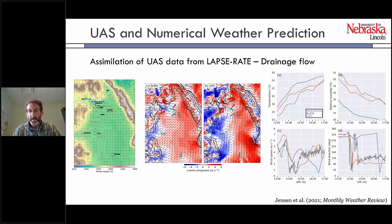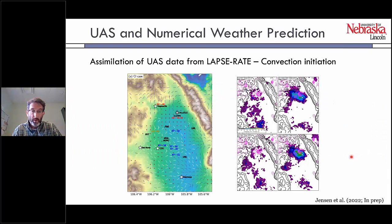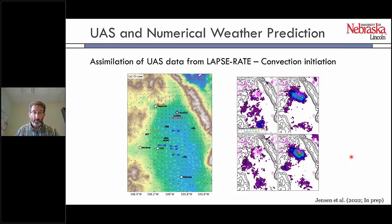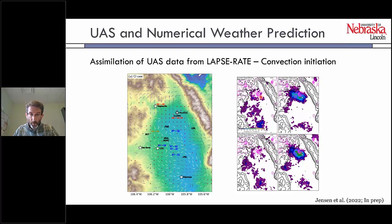They're also using LAPSE-RATE data to examine accuracy of convection initiation forecasts — work still in preparation. The takeaway is similar: once UAS data are assimilated into an NWP model, forecasts of convection initiation are improved. In the ensemble probability plots, when there is no UAS data assimilation, probability of precipitation is not particularly high where precipitation actually occurred. But when UAS data are assimilated, the probability is high where precipitation actually occurred.